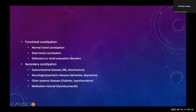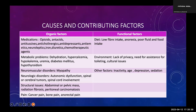Constipation can be functional — either normal transit, slow transit, or defecatory/rectal evacuation disorders — or secondary to various GI diseases like IBS and diverticulosis, neurological or psychiatric diseases like dementia and depression, systemic diseases like diabetes and hypothyroidism, or drug-induced causes. In a palliative care setting, drugs like opioids, anticholinergic agents, antiemetics, iron tablets, diuretics, and some chemotherapy agents are particularly relevant causes of constipation.